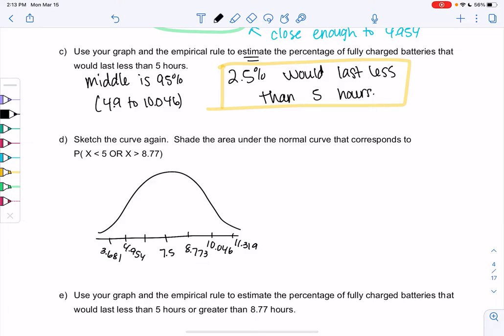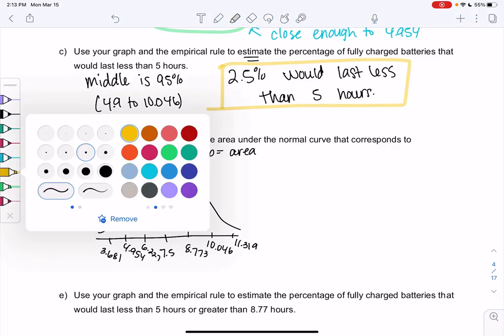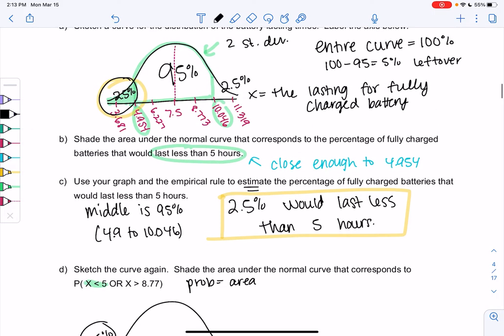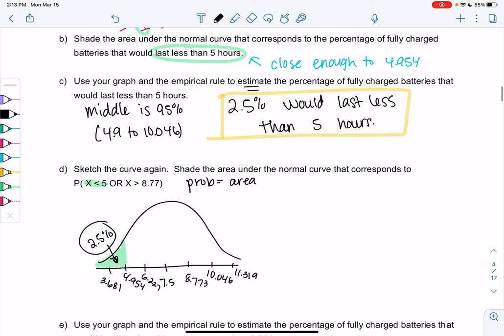The bottom should look the same as before, but we'll shade a different area. So if you're still drawing, pause the video. Otherwise, let's go ahead and shade the area that would represent the probability. Remember, probability equals area. And we want less than 5, which we already did, x less than 5. So we already know that that's 2.5%. So let's label that. Why do I know that? We just did that above. Or means add the probabilities together.